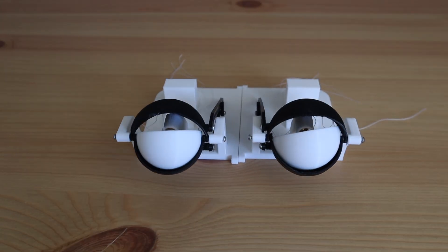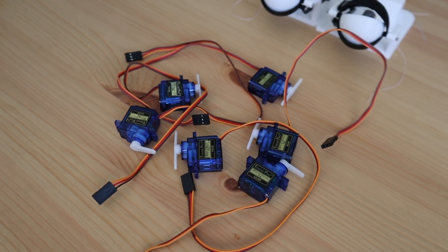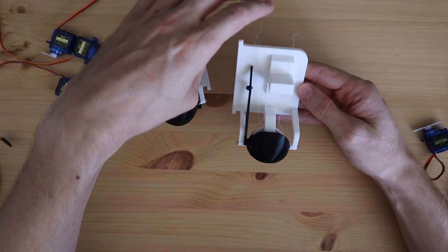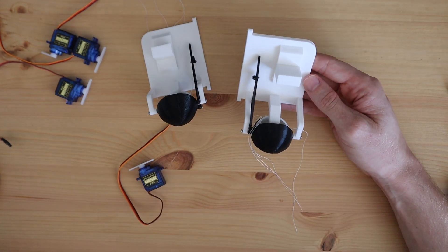Once we have our eyes and eyelids assembled, we can add our servos. I'm using 6 micro servos, 3 for each eye. These are just glued into place on the supporting faces as shown in the model.